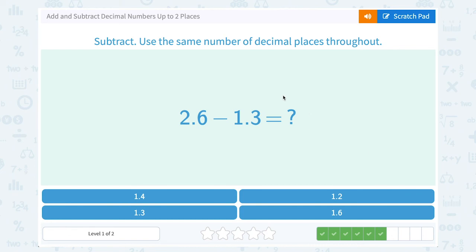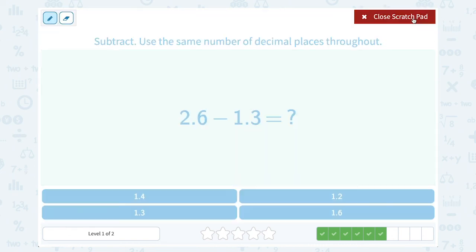2.6 minus 1.3 equals what number? Well, you can simply line this up. 2.6 minus 1.3, lining up our decimal points and then subtracting the numbers in each place value. In the tenths place, 6 minus 3 is 3. In the ones place, 2 minus 1 is 1. So we wind up with 1.3.